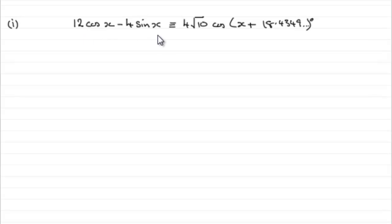We saw in the first part that this expression can be re-expressed as 4√10 cos(x + 18.4349°). So finding the minimum value of this is the same as finding the minimum value of this.